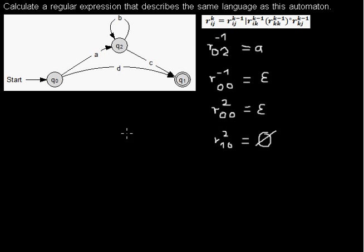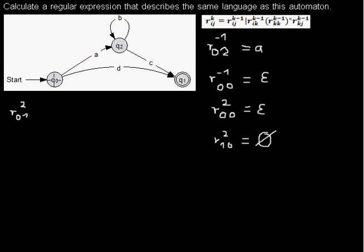If you want to calculate the regular expression for a whole automaton, you just put the numbers for the whole automaton into this formula and calculate it. I is our start state, so it's 0. J is our final state, that is 1. If you have an automaton with several final states, you have to convert it into one with a single final state first. K starts as the highest state number. This regular expression means what the whole automaton means, because when you read a word with an automaton, you start at the start state, end in the final state, and are allowed to go through any other state.